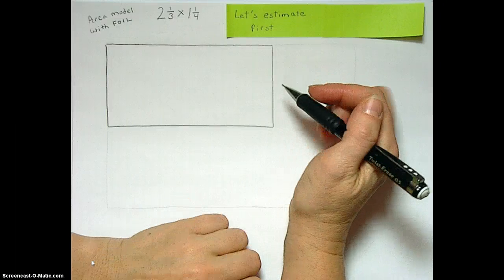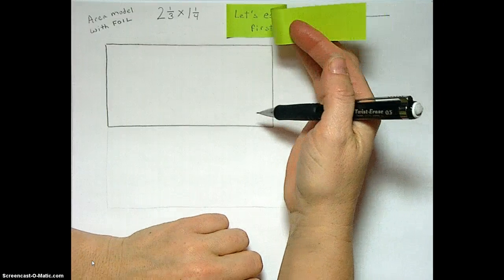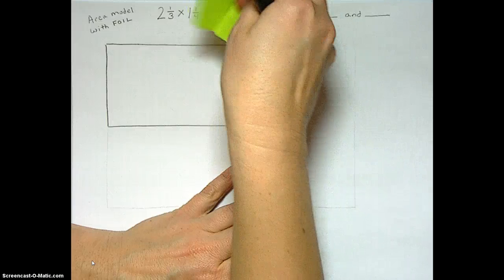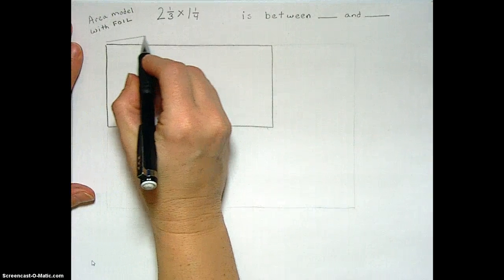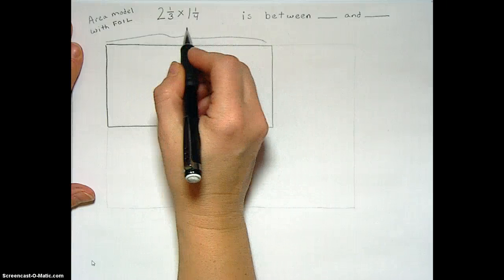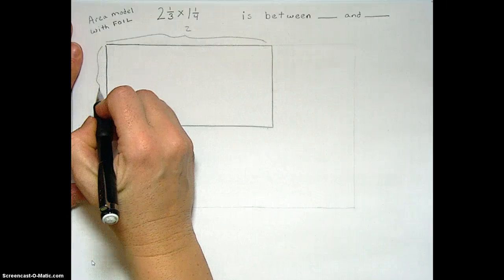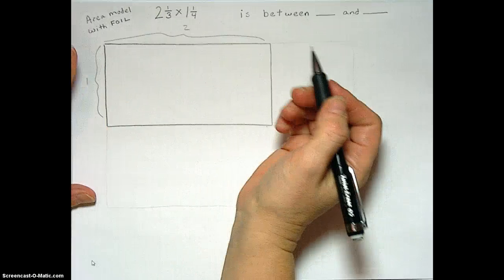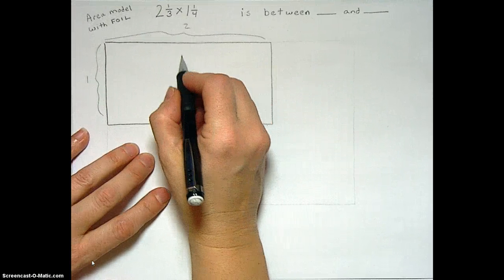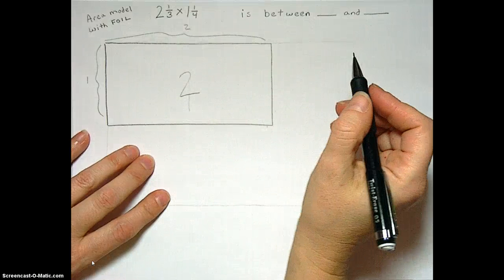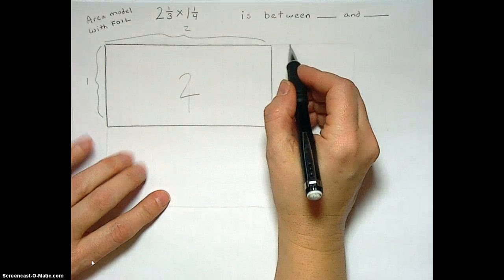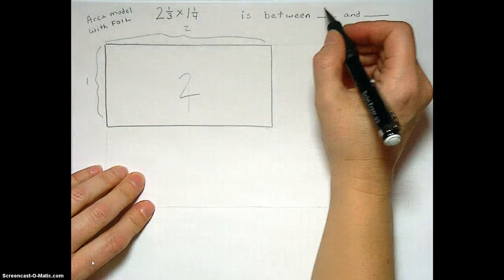But first we're going to estimate. So let's look at this. We're doing 2 and 1/3 times 1 and 1/4. We know that this is 2, right? And this is 1. Any rectangle that's 2 by 1 really has area 2. So we know that 2 and 1/3 times 1 and 1/4 has to be a little bit bigger than 2.